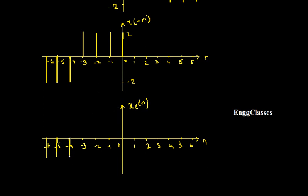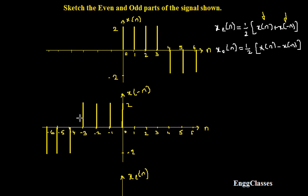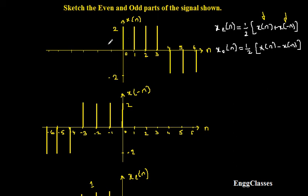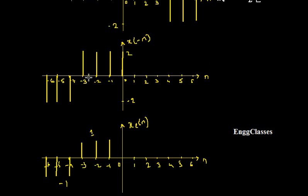At position minus 3, x(-n) has amplitude 2 and x(n) has nothing — 2 plus 0 gives 2, divided by 2 gives 1. Similarly at minus 2 and minus 1, I get amplitude 1. At position 0, x(n) has amplitude 2 and x(-n) also has amplitude 2 — 2 plus 2 gives 4, divided by 2 gives 2. So at position 0 the even part has amplitude 2.